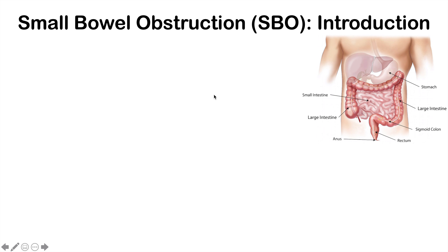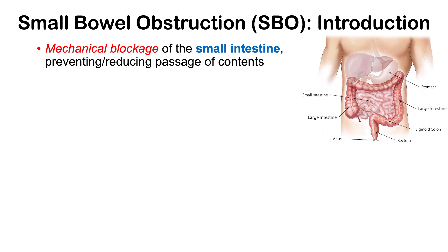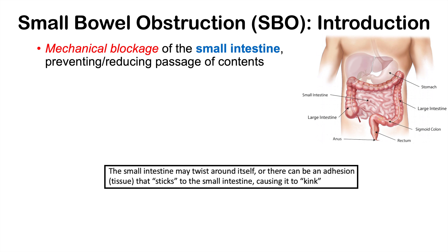We're going to first look at what the small bowel is. When we say small bowel, we're referring to the small intestines. When you swallow food, this is your esophagus, here's your stomach, and your stomach leads into the small intestines which wind around within your abdomen, eventually leading to the large intestine. So a small bowel obstruction is a mechanical blockage of the small intestine, preventing or reducing the passage of contents.